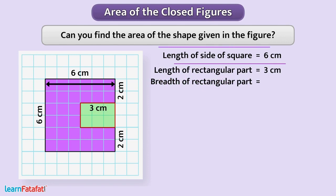Here, length of side of square is 6 centimeter. If we subtract this 2 centimeter length, and this 2 centimeter length from it, we will get the breadth of the rectangle, which will come out to be 2 centimeter.